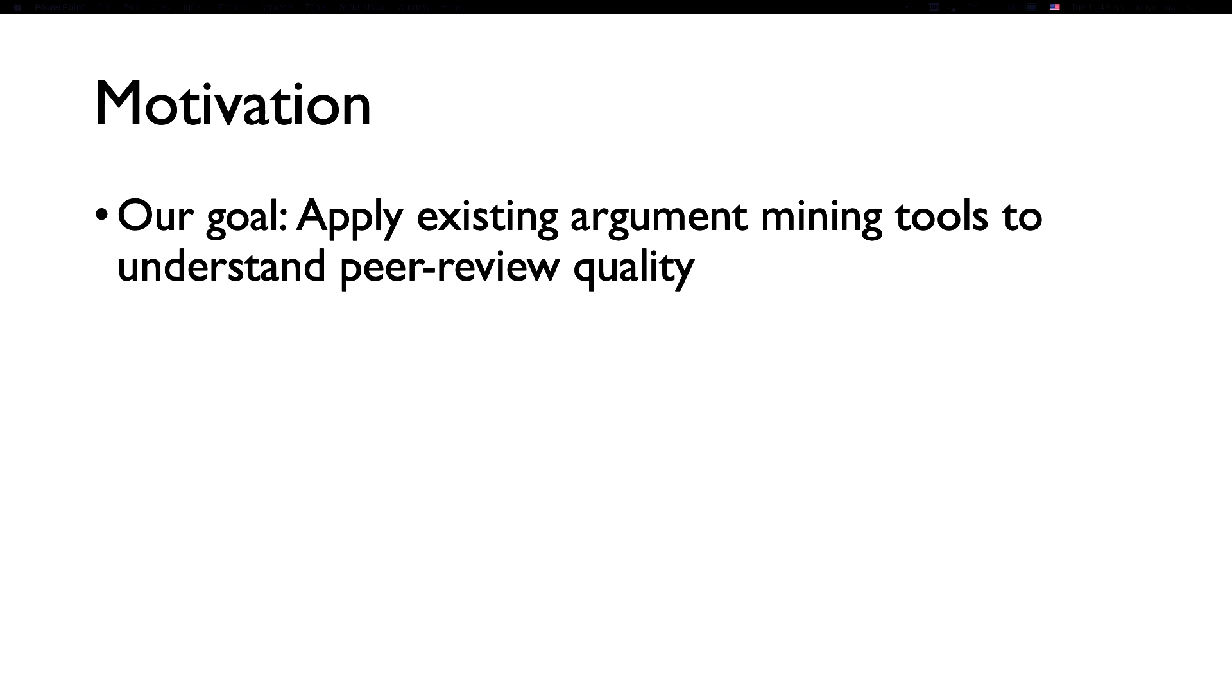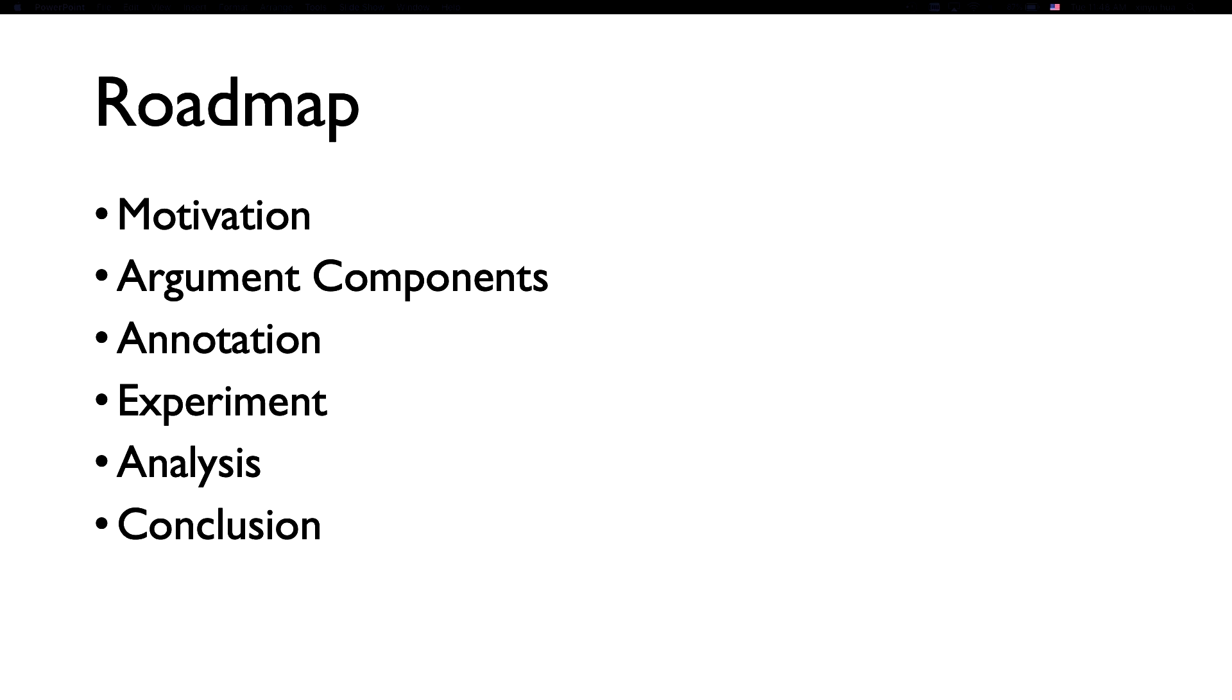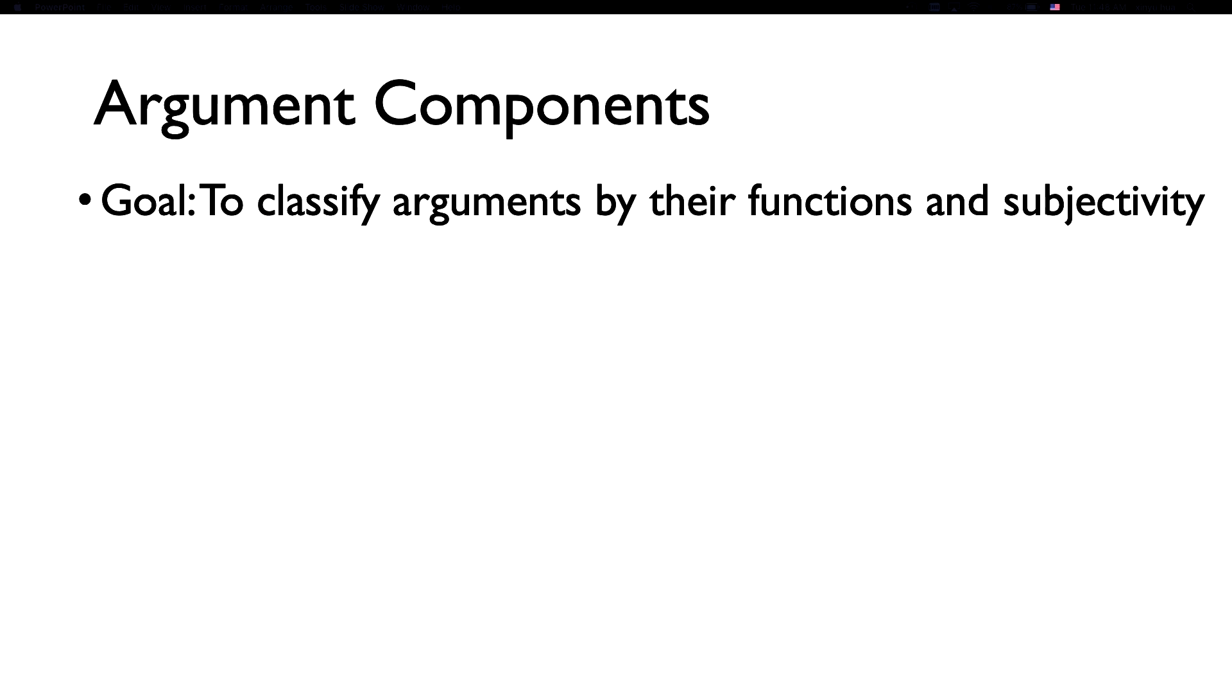Since peer review is a relatively new domain for argument study, in this work, our goal is to apply existing models to understand the review quality. As an initial step, we analyze the review components. In the future, we also hope to investigate the structural information from the reviews. Please let me introduce what are the component types that we define in this work. The principle of our argument schema is to be able to classify the arguments by their functions and subjectivity.